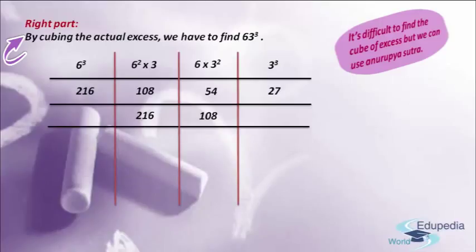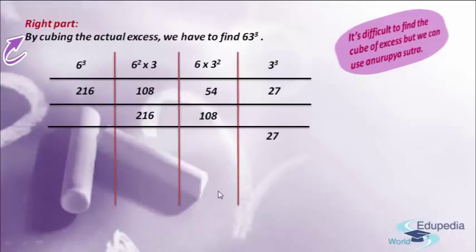Now I am going to place one more horizontal bar. I have two rows — the first row and the second row — and we have to add up these two rows. In the fourth part there are no numbers to add with 27, so I am writing 27 as it is. In the third part we have 54 and 108; adding these gives 162. In the second part we have 108 and 216; adding gives 324. In the first part, 216 stands alone, so I am writing 216 directly.